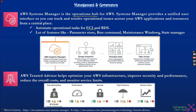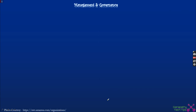An important thing to remember for the exam is AWS Trusted Advisor. Trusted Advisor is an advisor tool that provides advice on security, performance, cost optimization, and more. You need to remember these five things: cost optimization, performance, security, fault tolerance, and service limits. Green tick marks indicate good status, exclamation marks indicate warnings, and red marks indicate items needing immediate attention. All these details are provided by AWS Trusted Advisor.